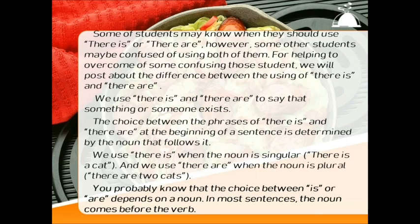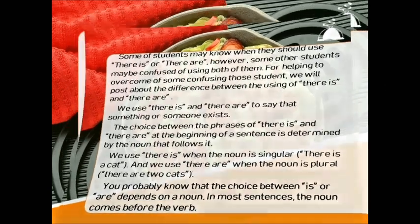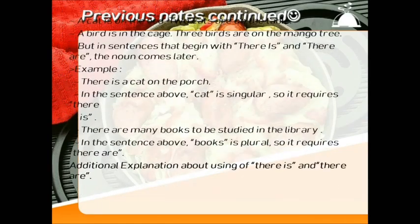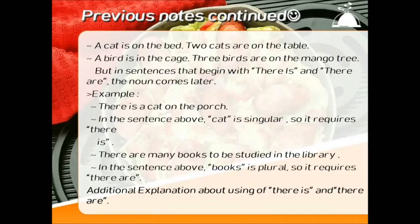In most sentences, the noun comes before the verb. For example: a cat is on the bed. Two cats are on the table. A bird is in the cage. Three birds are on the mango tree. But in sentences that begin with 'there is' and 'there are', the noun comes later.